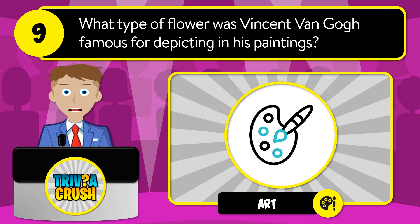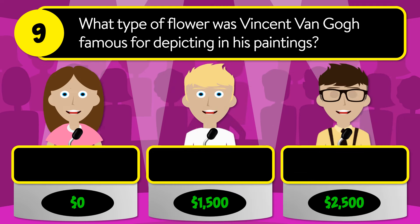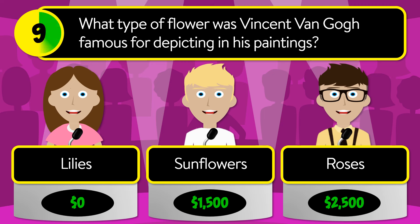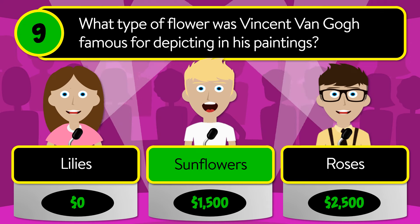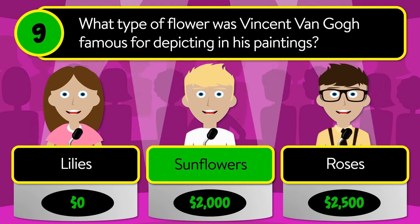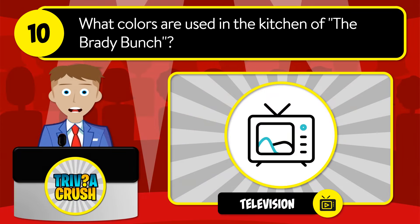Question number nine: what type of flower was Vincent van Gogh famous for depicting in his paintings? Was it lilies, sunflowers, or roses? The correct answer is sunflowers.